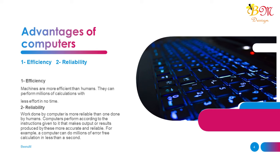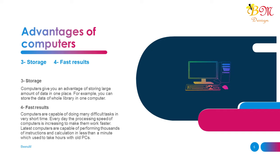3. Storage: Computers give you the advantage of storing a large amount of data in one place. For example, you can store the data of a whole library in one computer. 4. Fast Results: Computers are capable of doing many difficult tasks in a very short time. Every day the processing speed of computers is increasing. Latest computers can perform thousands of instructions and calculations in less than a minute, which used to take hours with old PCs.